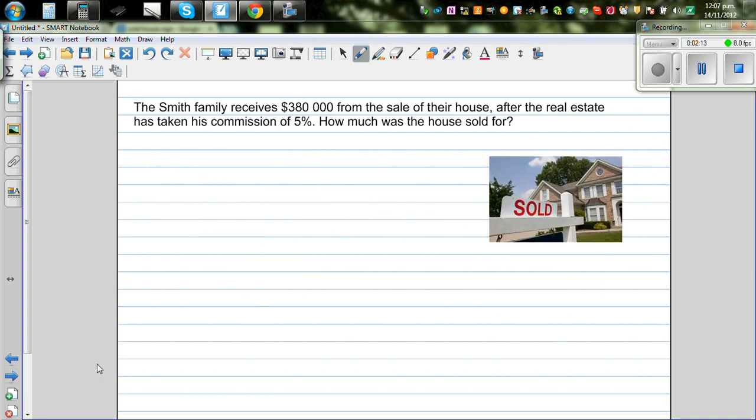Let's look at one more question. The Smith family receives $380,000 from the sale of the house after the real estate has taken his commission of 5%. How much was the house sold for? So again this is a question of finding 100%. You have to read between the lines. They got $380,000 after the real estate agent took his commission of 5%. That means they got how much percent? They got 95% of the sale price.